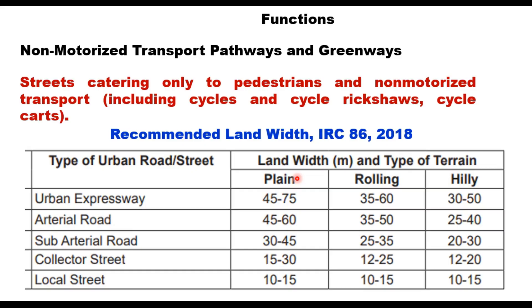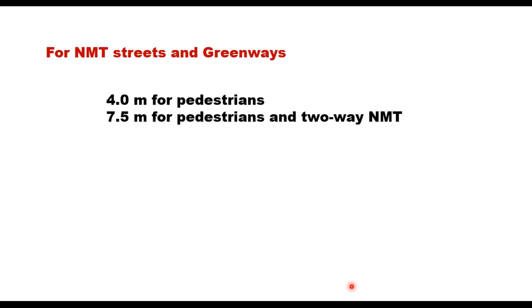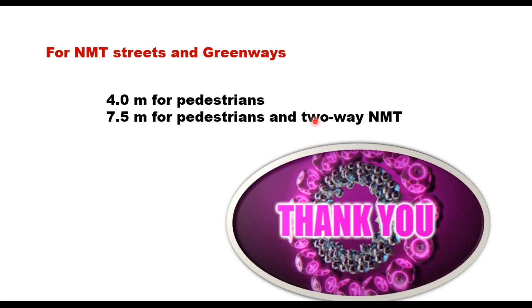The recommended land use as per IRC 86 2018 for different types of urban roads and streets is as follows. For urban expressways in plain, rolling, and hilly terrain, the land width is 30 to 75 meters. For arterial roads, it is 45 to 60 meters in plain areas and 25 to 40 meters in hilly areas. Sub-arterial roads have 30 to 45 meters in plain terrain, 25 to 35 meters in rolling terrain, and 20 to 30 meters in hilly terrain. Similarly, specifications exist for collector and local streets. For non-motorized traffic streets and greenways, 4 meters width is provided for pedestrians alone, and 7.5 meters when two-way non-motorized traffic is also present.